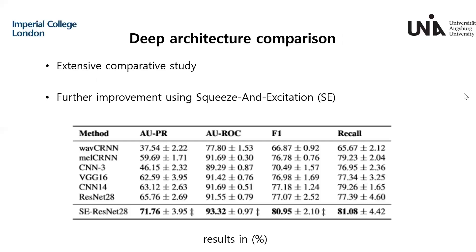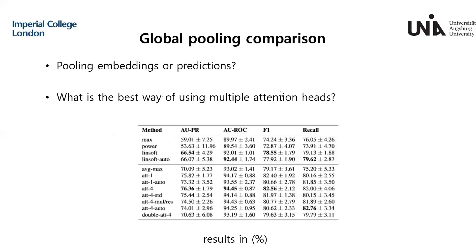We perform an extensive comparative study among recent acoustic architectures by controlling the pooling mechanism. We then show that an improvement upon this model based on the addition of squeeze and excitation leads to an increase across all performance measures. We then perform a second comparative study among global sequence pooling mechanisms, this time controlling the core model to be our proposed squeeze and excitation ResNet. We include in the comparison both prediction-based and embedding-based pooling methods.